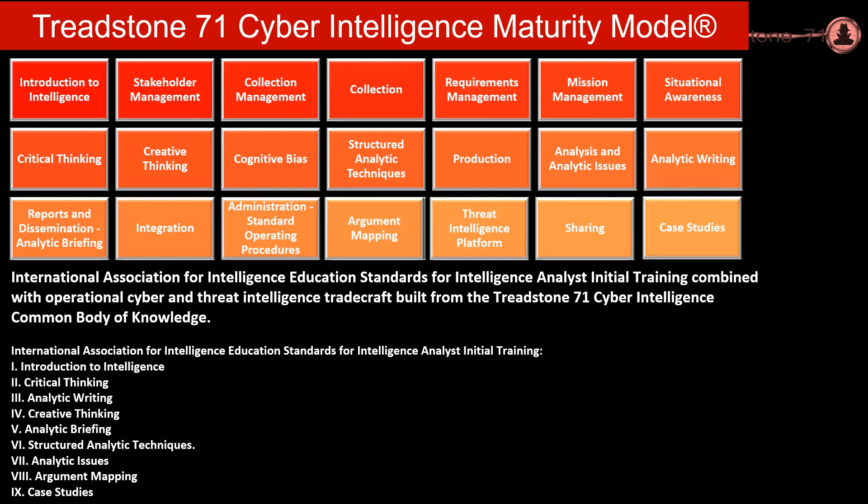Then we get into collection and maturity around our collection area, which includes requirements management and mission management — our existing resources, the skills we have, and how we're going to assign them to certain targets developed in our collection plan. This can include not only open source tool sets, but internal data feeds, vendor feeds, and a threat intel platform. We also get into situational awareness and how this can impact your intelligence flow and lifecycle, as well as aligning with your corporate competitive intelligence, business intelligence, and physical intelligence.